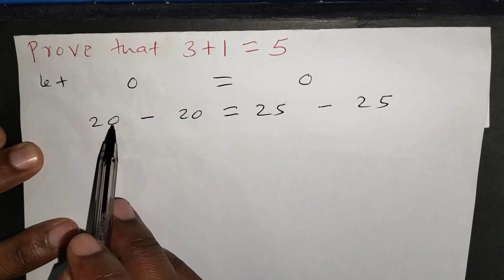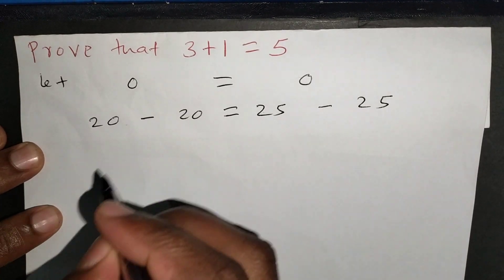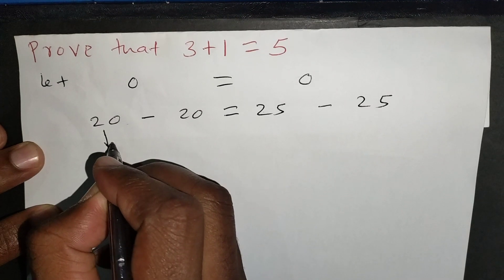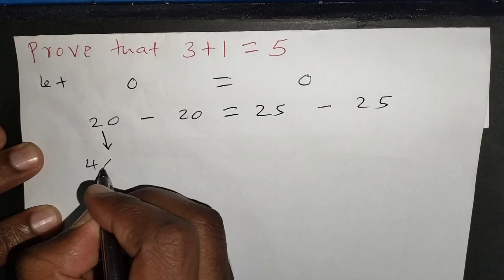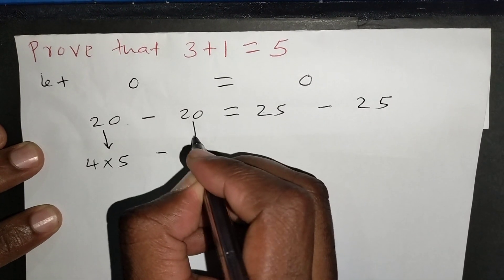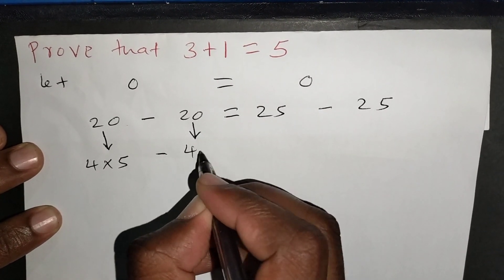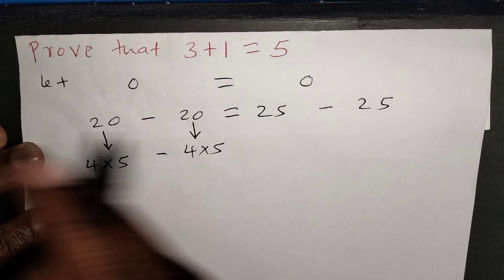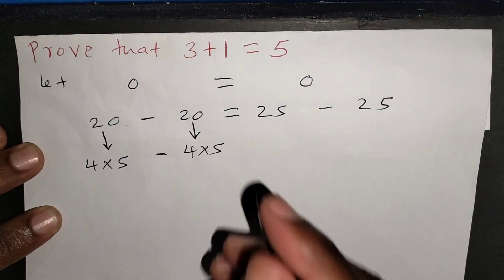Now, I want to look at the factors of 20. Remember, 20 can be obtained by taking 4 multiplied by 5. This 20 can be obtained by taking 4 multiplied by 5, minus this other 20 can also be obtained by taking 4 multiplied by 5, which will give you 20.